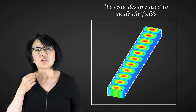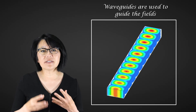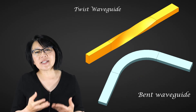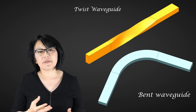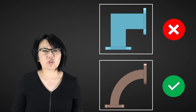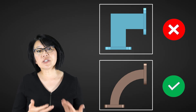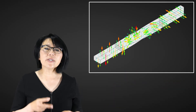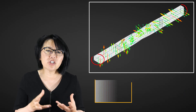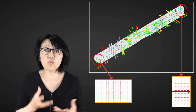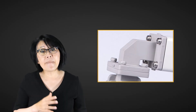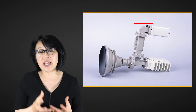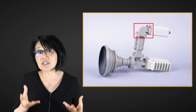Waveguides are used to guide fields inside, and twists and bends should be implemented gradually — otherwise the fields can be distorted, distorting your intended signal. Twists are primarily used to change the polarity of the signal, whereas bends can be used to help fit the physical waveguide into a smaller physical space.